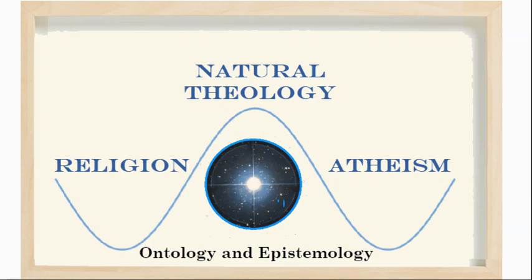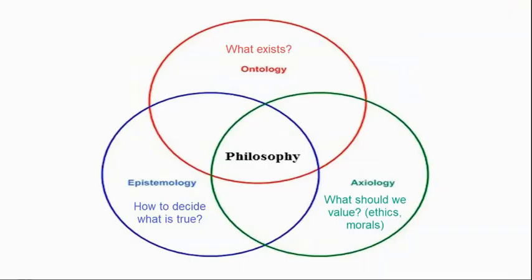Today we're going to talk about ontology and epistemology. Ontology goes to what exists. For us, only the natural world is in our ontology.